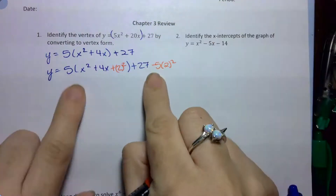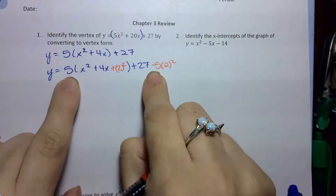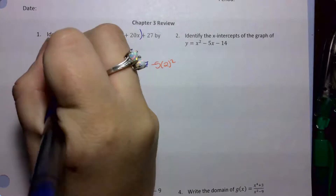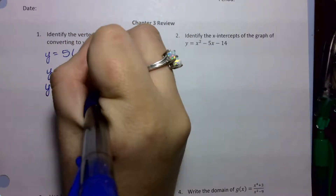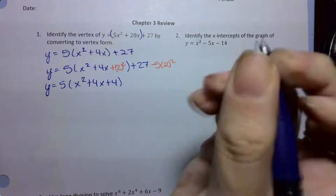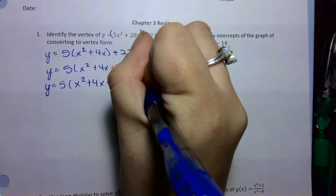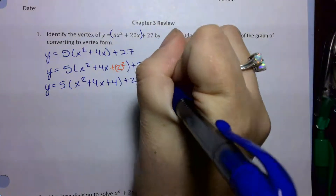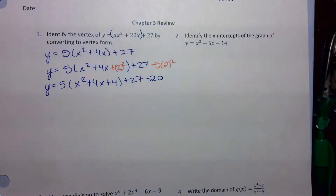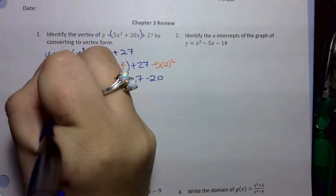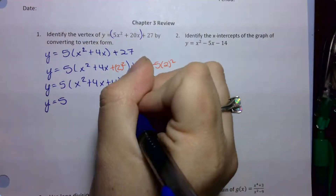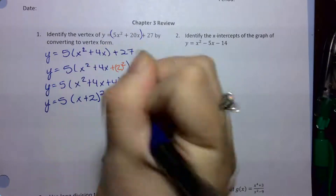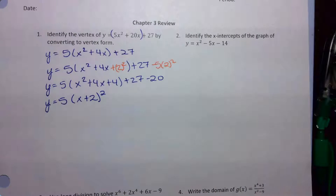These will always match the numbers — they're just opposite in sign. So if I rewrite this, I get 5 times x squared plus 4x plus 4. Then I have 27, and 5 times negative 5 times 2 squared is negative 20. Then what I want to do with the stuff inside the parentheses is factor. I'm looking for what multiplies to 4 and adds to 4. This is 2, and I have two 2's, so that comes out to being squared.